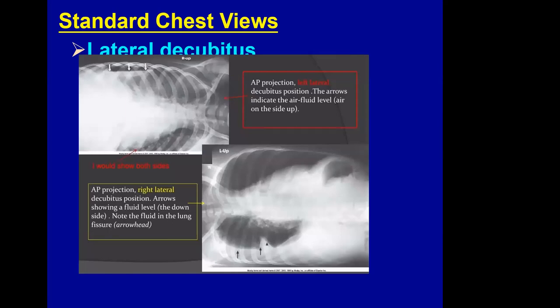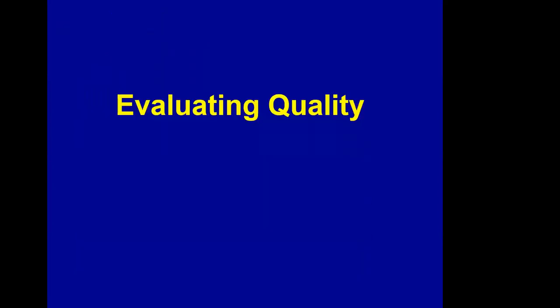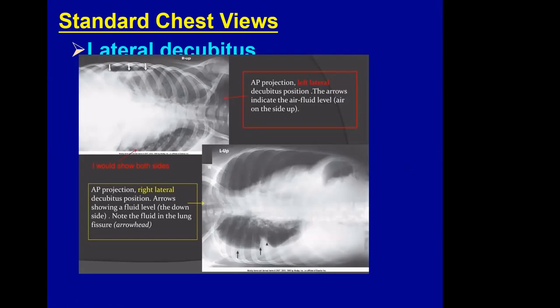Here is a lateral decubitus view. You can see the small black arrows on the lower radiograph showing a fluid level — a pleural effusion.